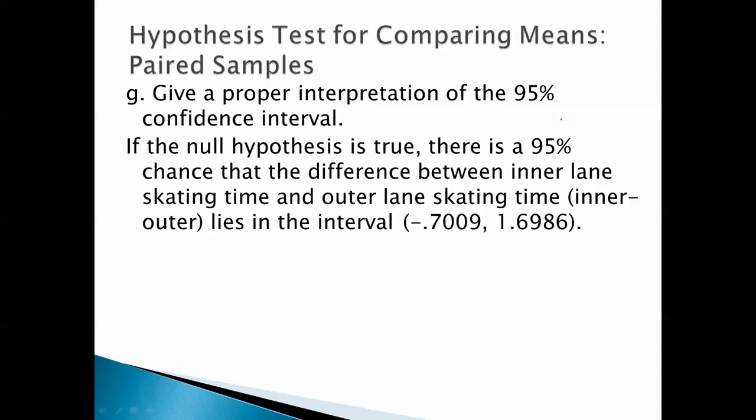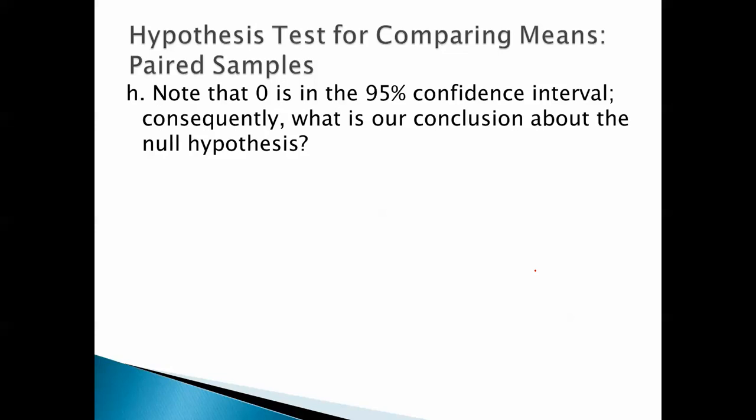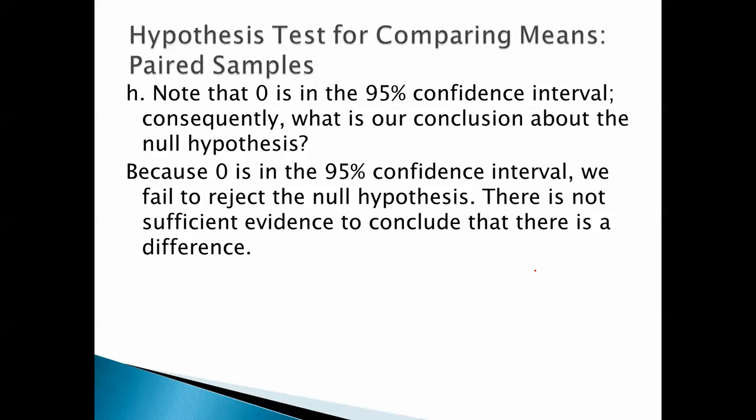Give a proper interpretation of the 95% confidence interval. Well, if the null hypothesis is true, there is a 95% chance that the difference between the inner lane skating time and the outer lane skating time lies in this interval. Note that 0 is in the 95% confidence interval. Consequently, what is our conclusion about the null hypothesis? Because 0 is in the 95% confidence interval, we fail to reject the null hypothesis. The difference might be 0. There is not sufficient evidence to conclude that there is a difference. And that concurs with what we saw earlier.